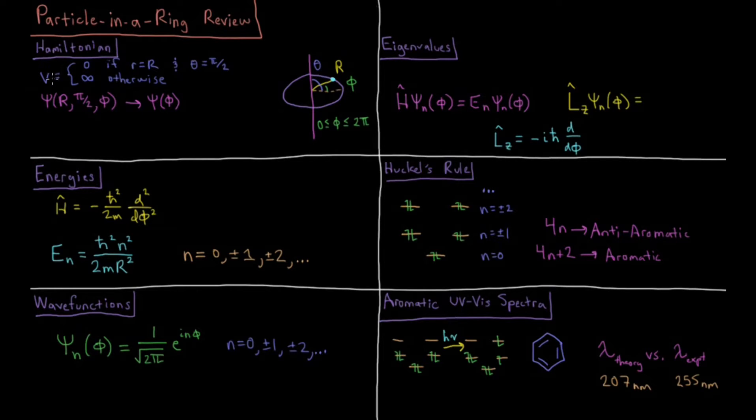The potential energy for the particle in a ring is zero if it's in the ring and infinity otherwise. We define the ring in spherical polar coordinates. The ring has a radius R, so R always equals capital R, and this ring is always at theta equals 90 degrees relative to the z axis to be in a ring, so theta equals pi over 2. Those are our coordinates.